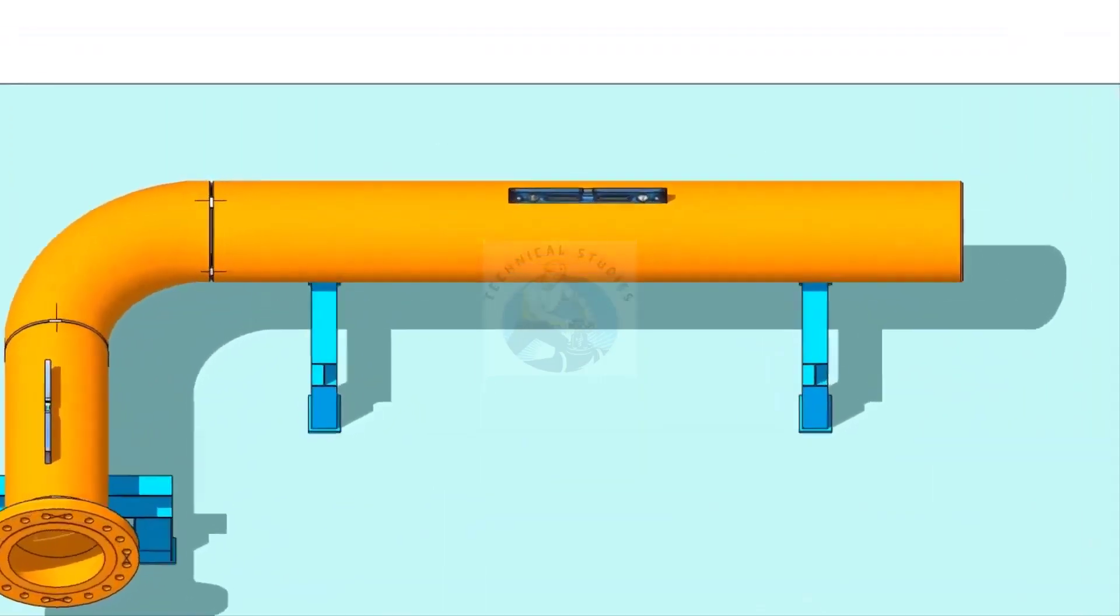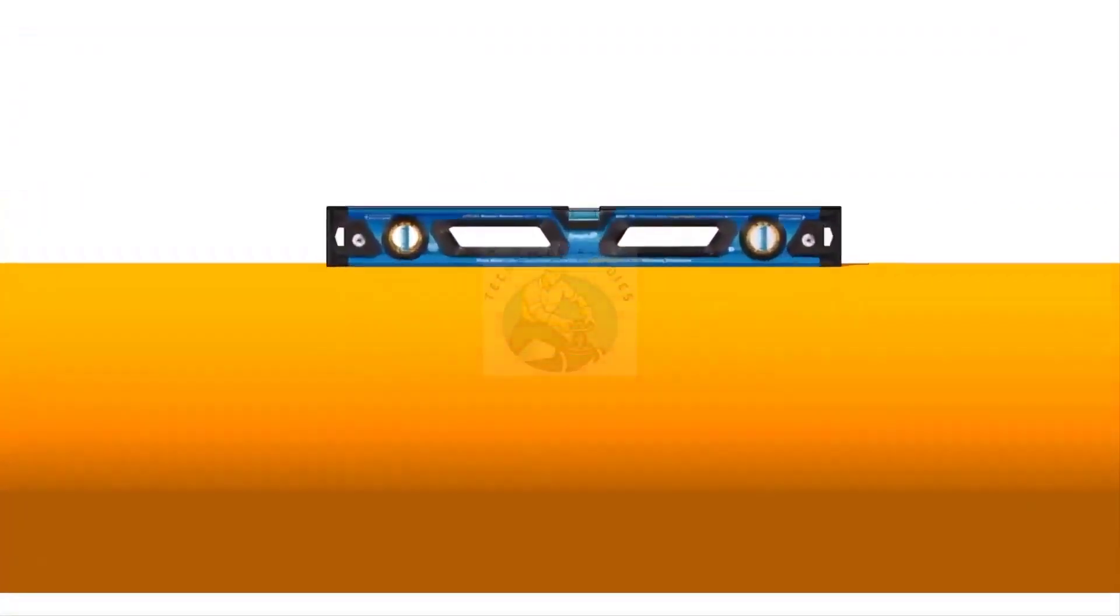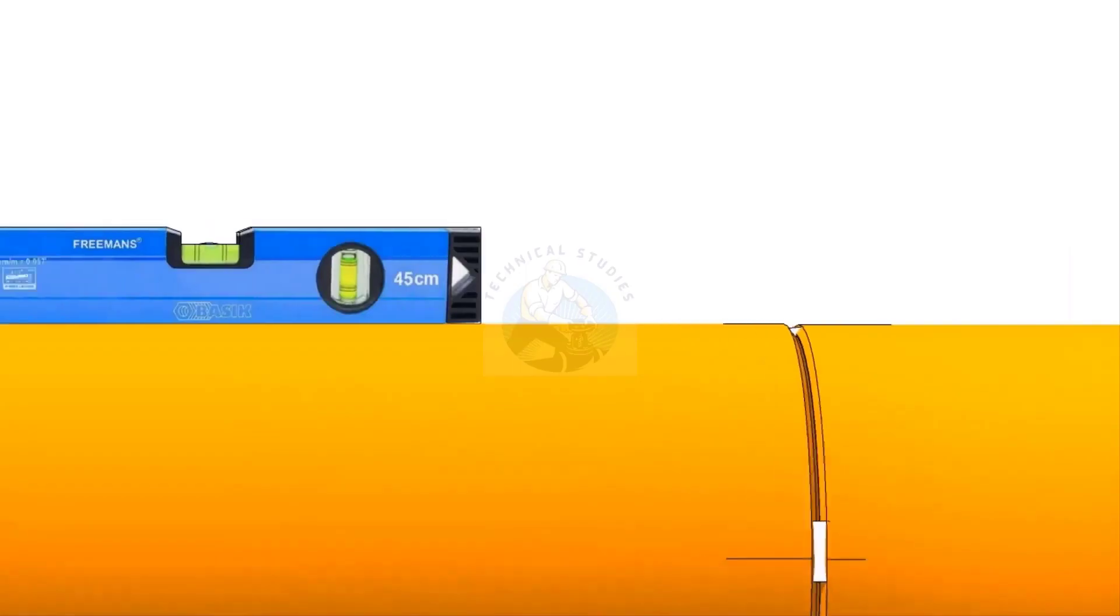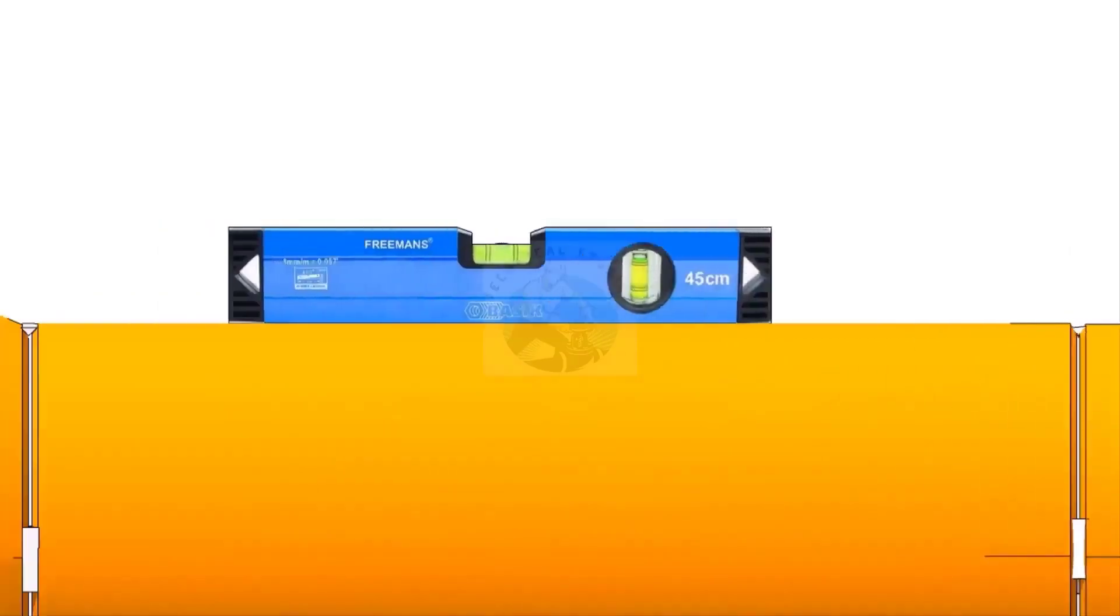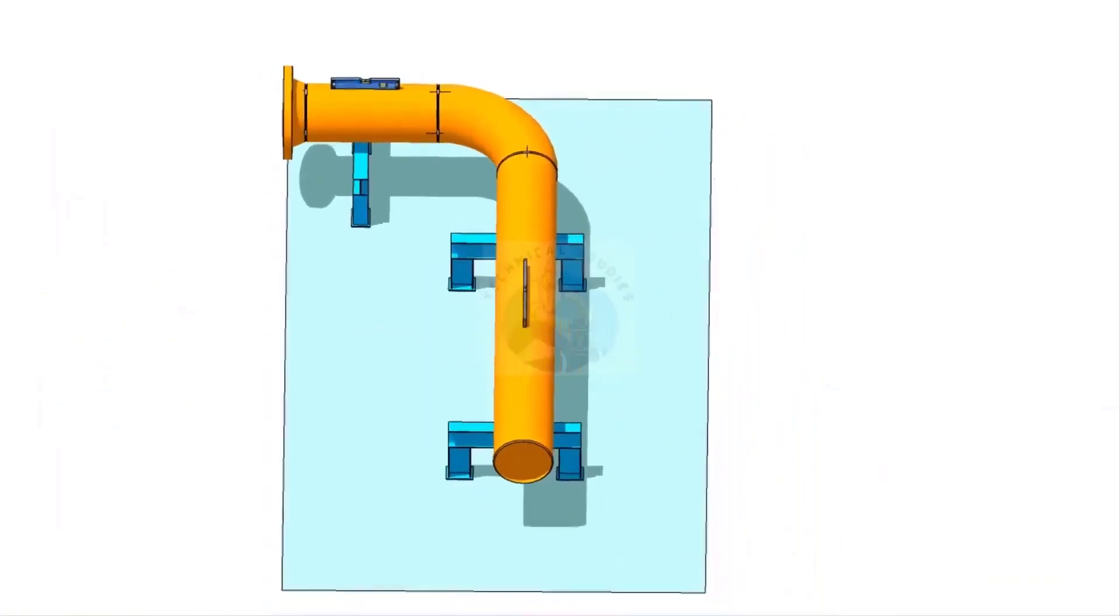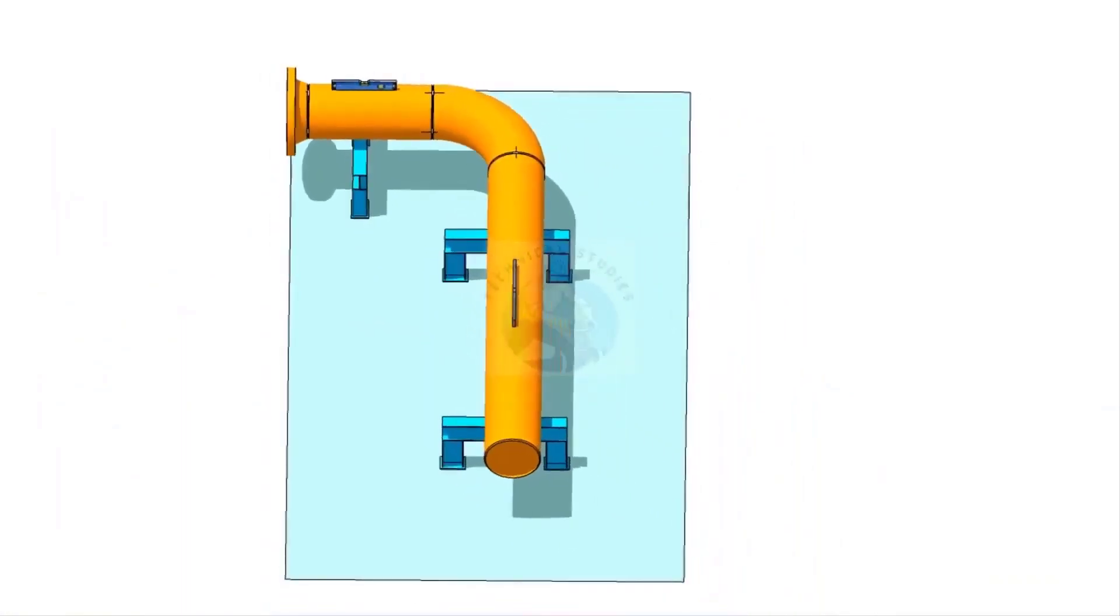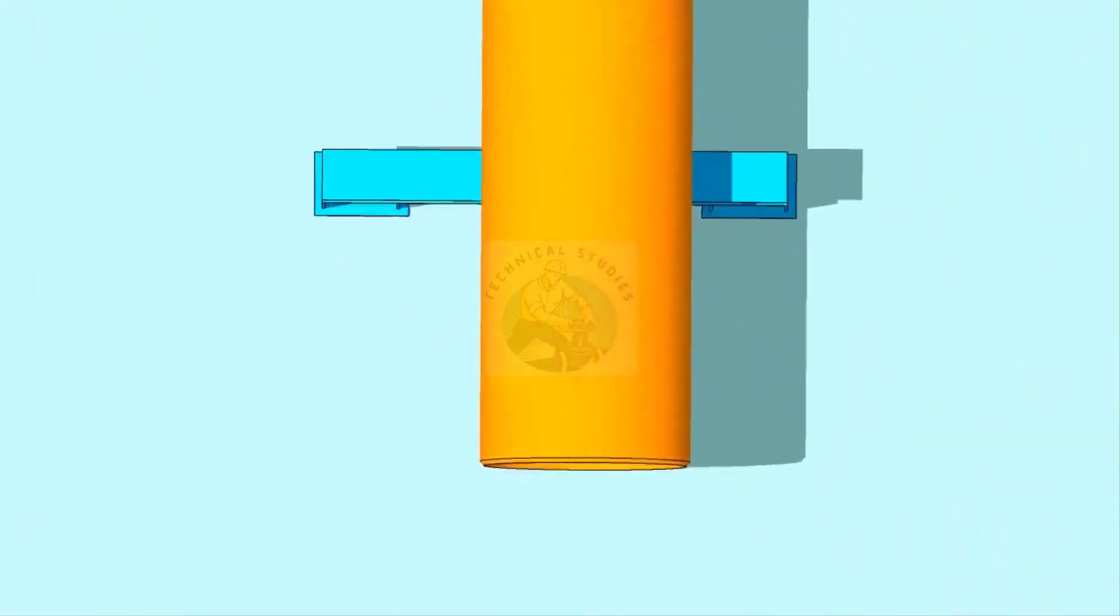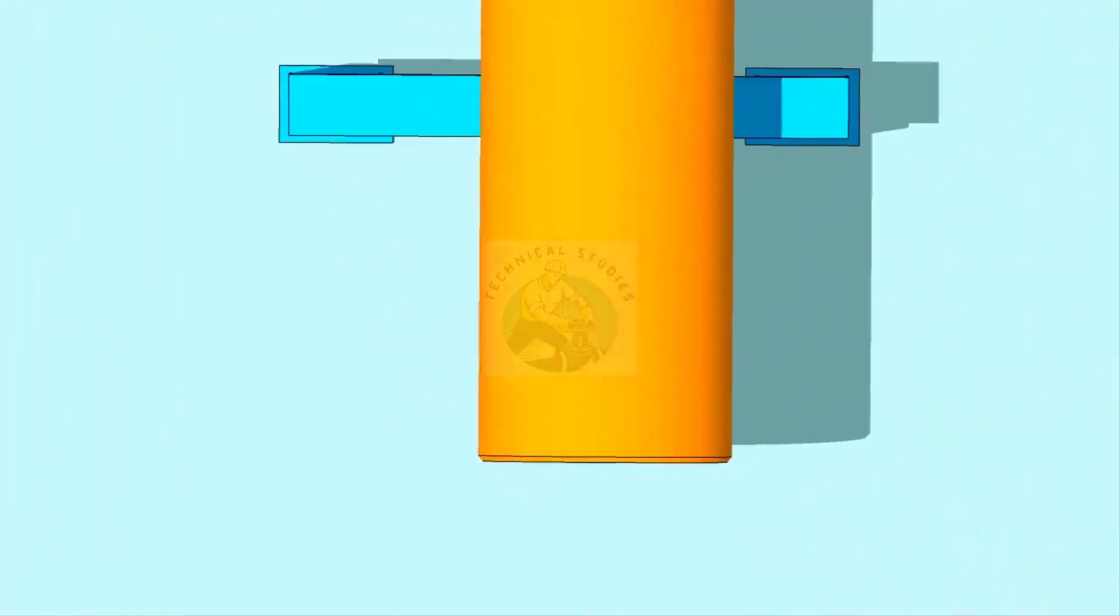Now go to the existing spool, check the level, and correct it. Mark the 0 degree.